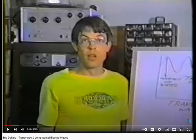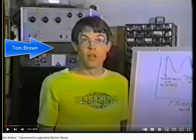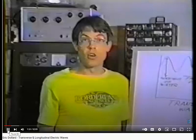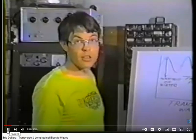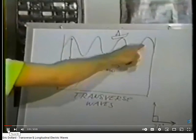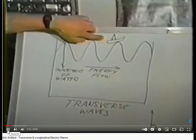The video starts with a discussion of the differences between longitudinal and transverse waves. Modern science will tell you that longitudinal electric waveforms do not exist, and the video aims to show that they do. Using water as an analogy: everybody understands waves in water, which we call a transverse waveform. The movement of the water is up and down, and the energy flow goes in the direction of propagation.